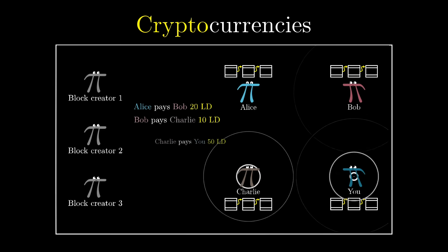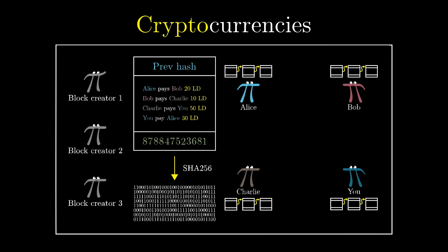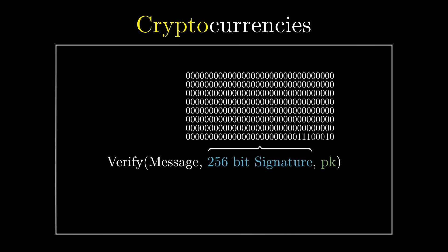In the main video on cryptocurrencies, I made two references to situations where, in order to break a given piece of security, you would have to guess a specific string of 256 bits.